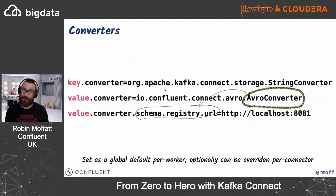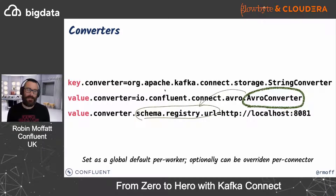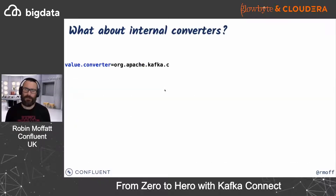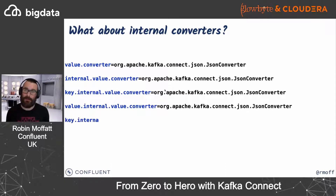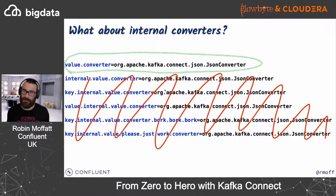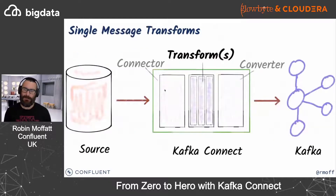We specify which converter to use in the configuration — we can specify it globally within the connect worker configuration, or override it per connector. You may want to override if you're writing a sink connector and the person writing data onto the topic uses a non-default serialization format. Converters are specified per key and per value, since Kafka messages are key-value bytes. There are also internal converters which have been deprecated for a while — if you see them mentioned on Stack Overflow just ignore them unless you're on a very old version of Apache Kafka.